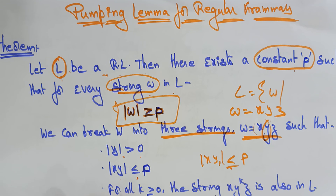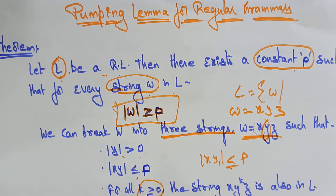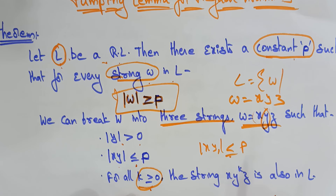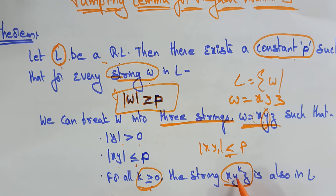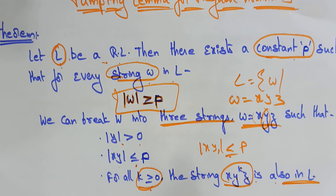The third condition is: for all K greater than or equal to 0, the string X Y^K Z is also in language L. So this is the theorem — it's the theorem of the pumping lemma.